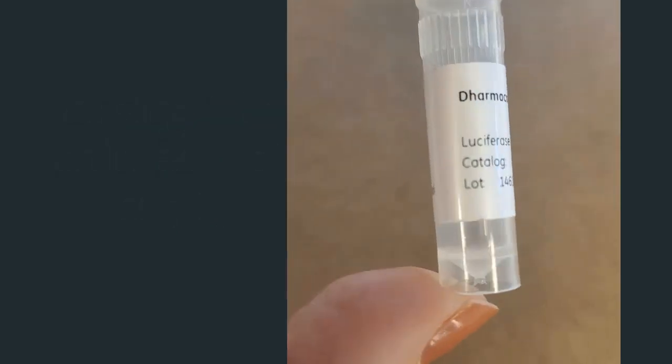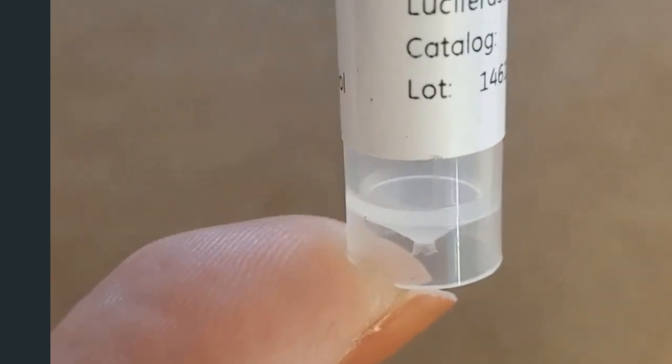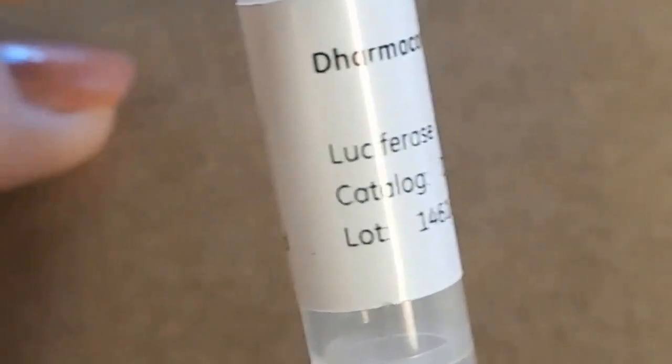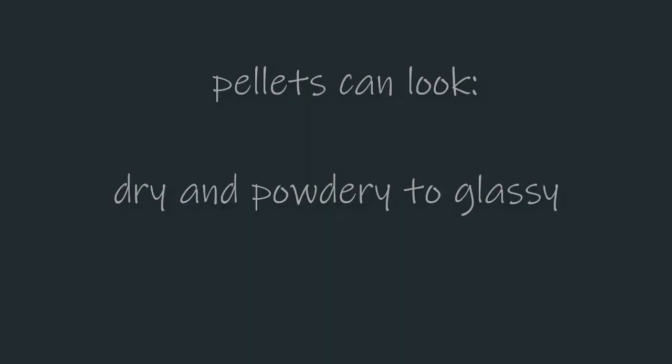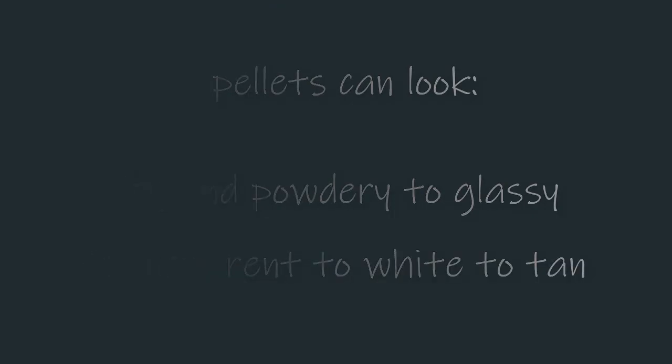In some cases, if you look closely, you can see a pellet near the bottom of the tube. These pellets can vary in appearance from powdery to more glassy looking, and also in color, such as transparent to white to yellow to tan.